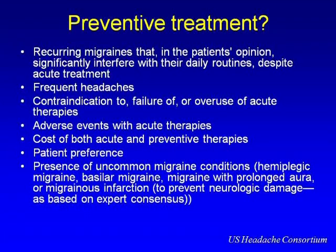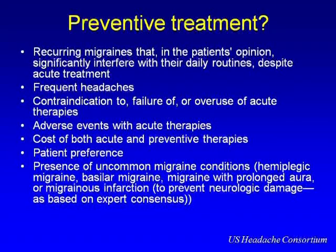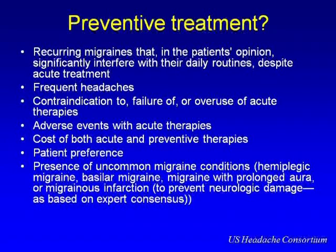Regarding preventive treatment: toradol (ketorolac) is off-label but IV toradol has been shown to be very effective for migraines, such as for patients presenting to the emergency room. I had a patient in clinic yesterday with migraine — I gave her an intramuscular toradol injection, but you can also use the nasal spray formulation. We are really talking about the patients not responding to triptans — the one to two percent with difficult migraines.